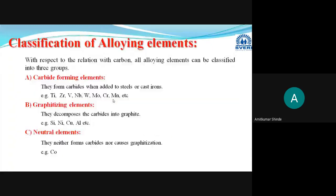The classification of alloying elements is done in two different ways. The first is based on their relation with carbon. According to this, there are three types: carbide forming elements, graphitizing elements, and neutral elements.